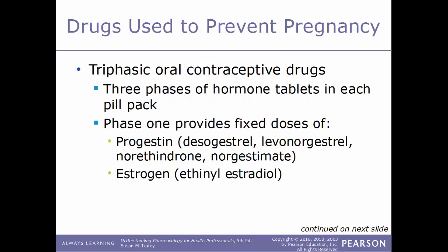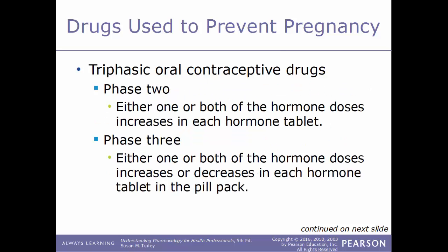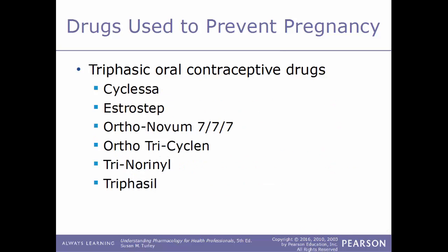Triphasic drugs have three phases of hormone tablets in each pill pack. Phase 1 has a fixed dose of both progestins and estrogen. In phase 2, either one or both hormone doses increase. In phase 3, either one or both hormone doses increase or decrease. Examples of triphasic contraceptives include Cyclessa, Estrostep, Ortho-Novum 7/7/7, Ortho Tri-Cyclen, Tri-Norinyl, and Triphasil.